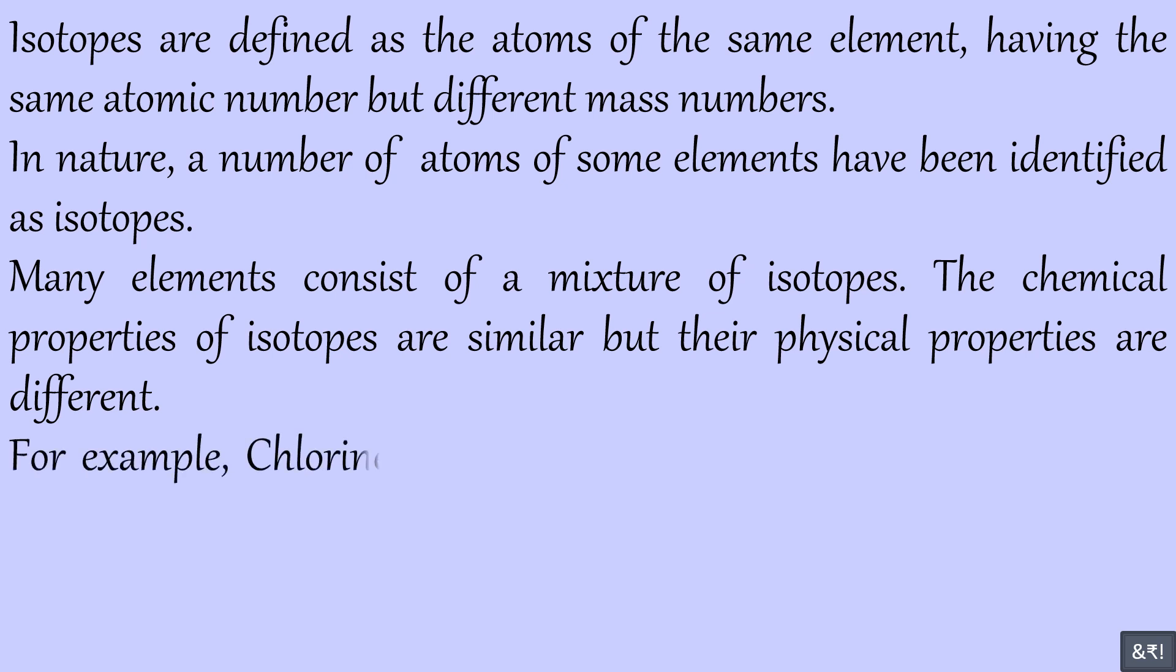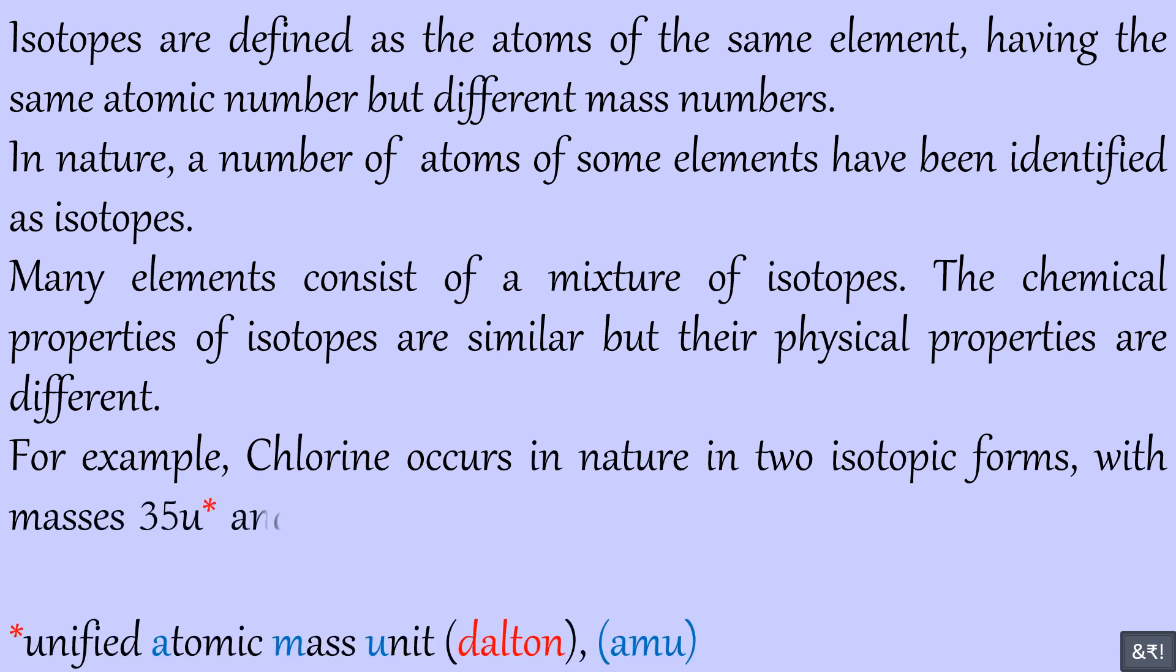For example, chlorine occurs in nature in two isotopic forms, with masses 35U and 37U in the ratio of 3 to 1.